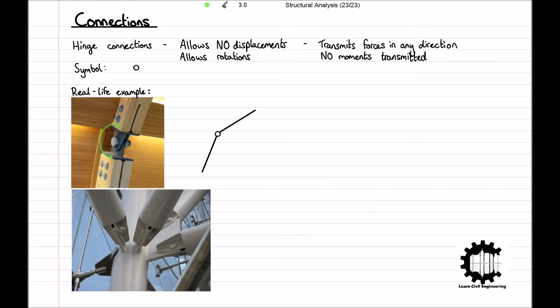Another example of a hinge connection are these beams connected to this column. Again, the beams are connected to the column such that no displacements can occur, but rotation can. For this second example, we can model it like so.